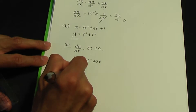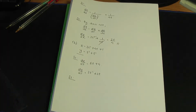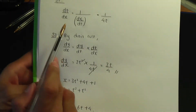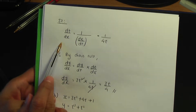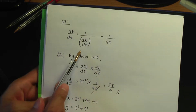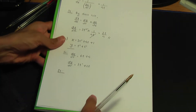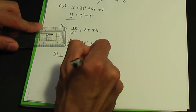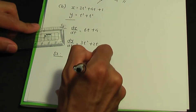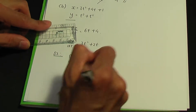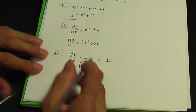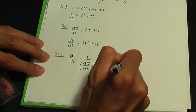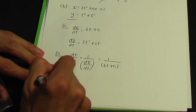Step two: work out dt over dx, which is 1 over dx by dt. From step one, dx by dt equals 6t plus 4, so dt over dx equals 1 over 6t plus 4.